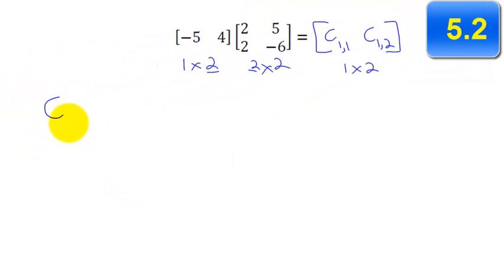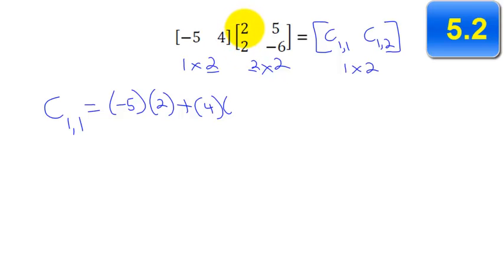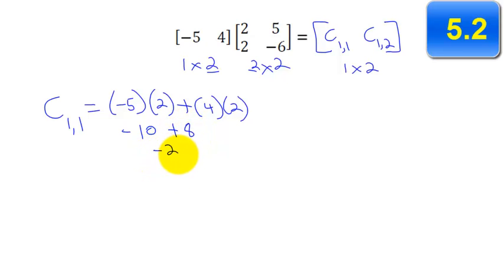To find element C(1,1), we take the first row and the first column. We take negative 5 from the first row and match it with the first number in the first column, which is 2, so that's negative 5 times 2. Plus, we move to the second element of the first row, which is 4, times the second number in the column, also 2. So this equals negative 10 plus 8, which equals negative 2. That's element C(1,1).